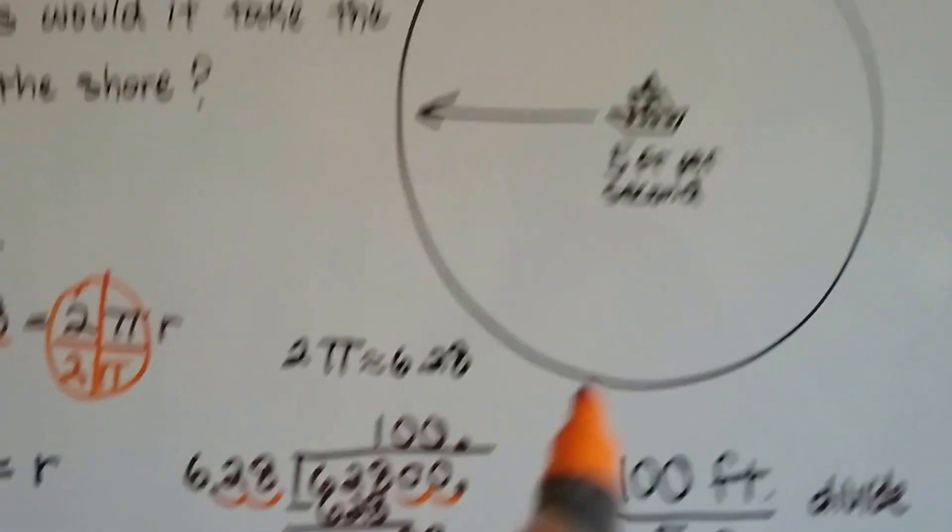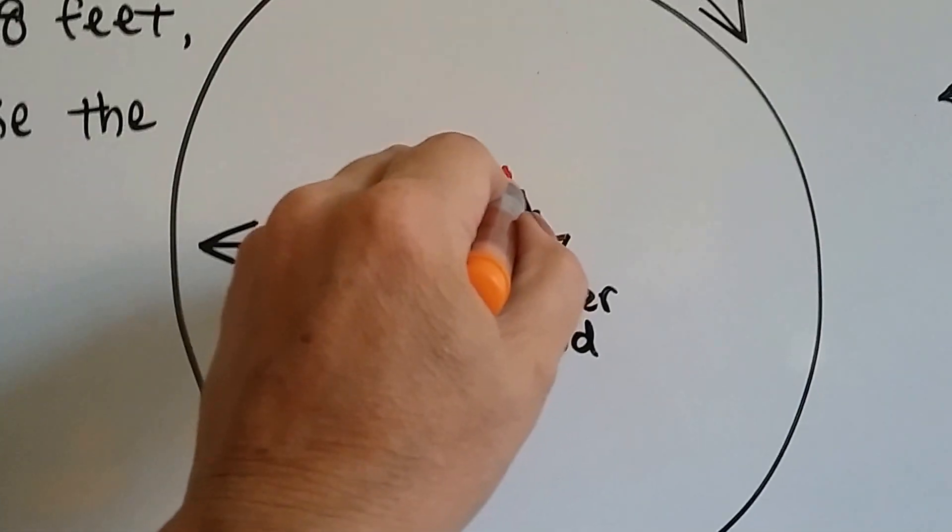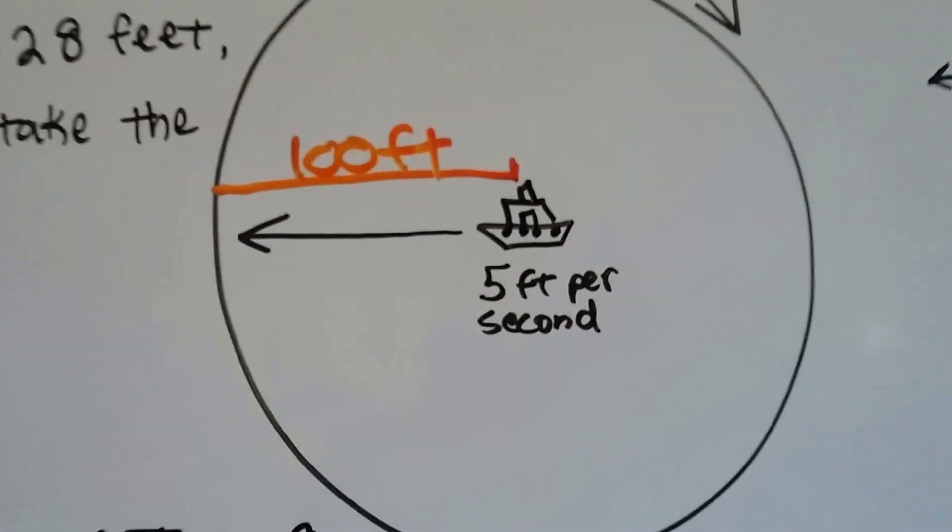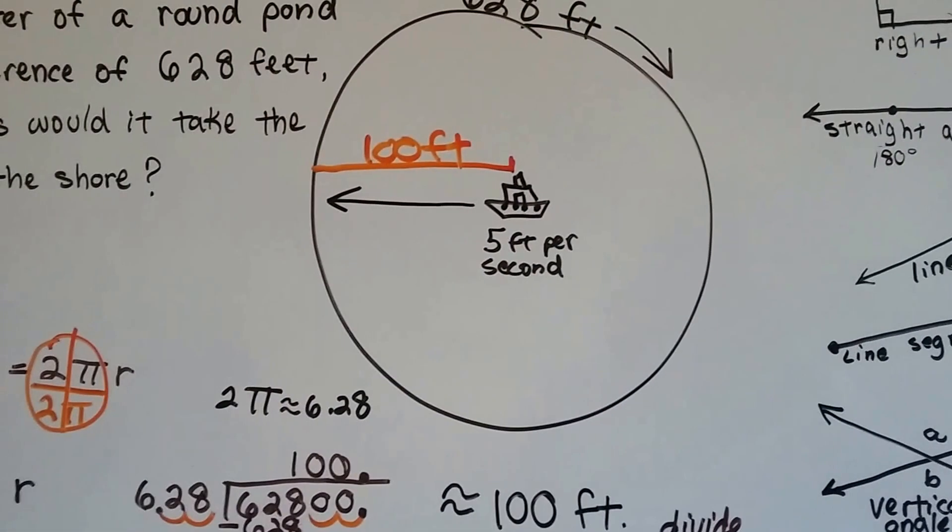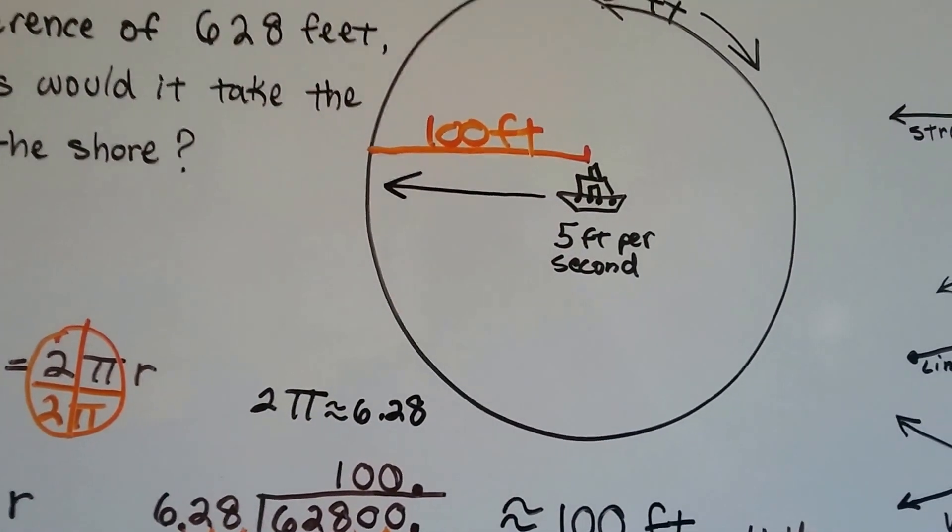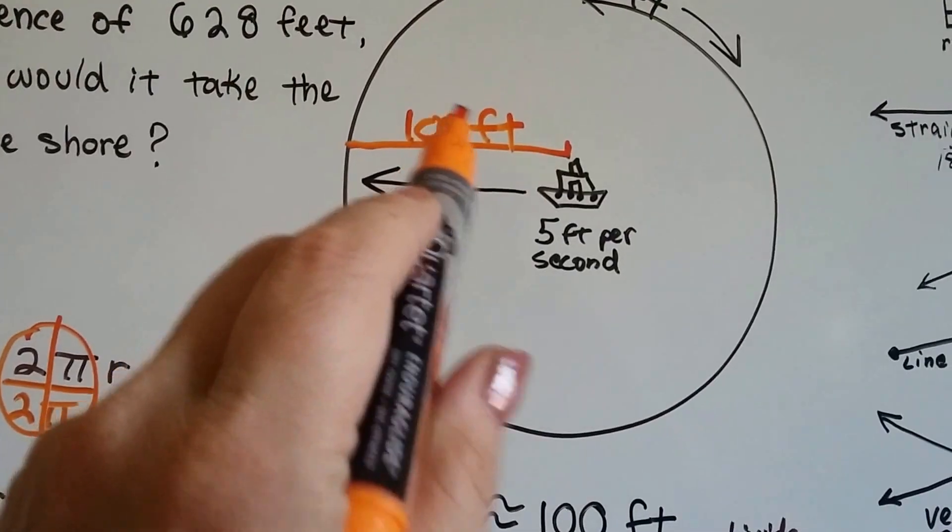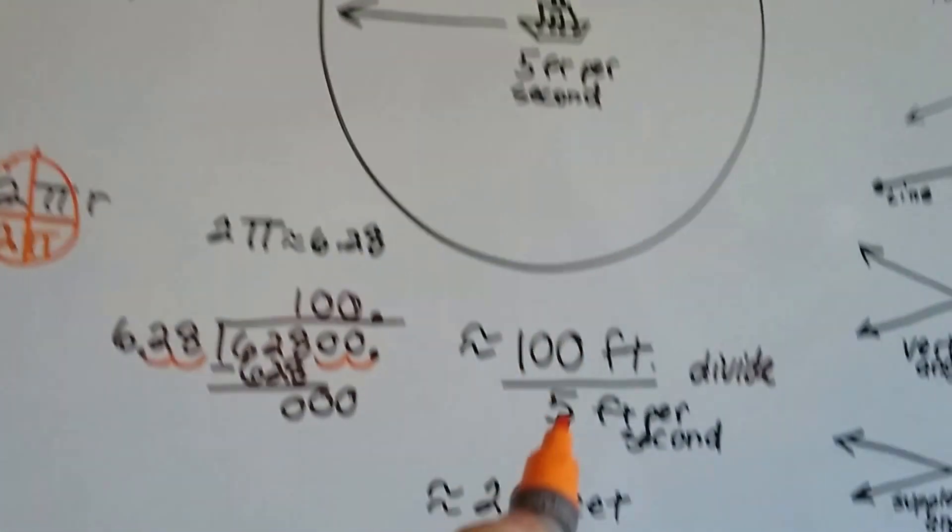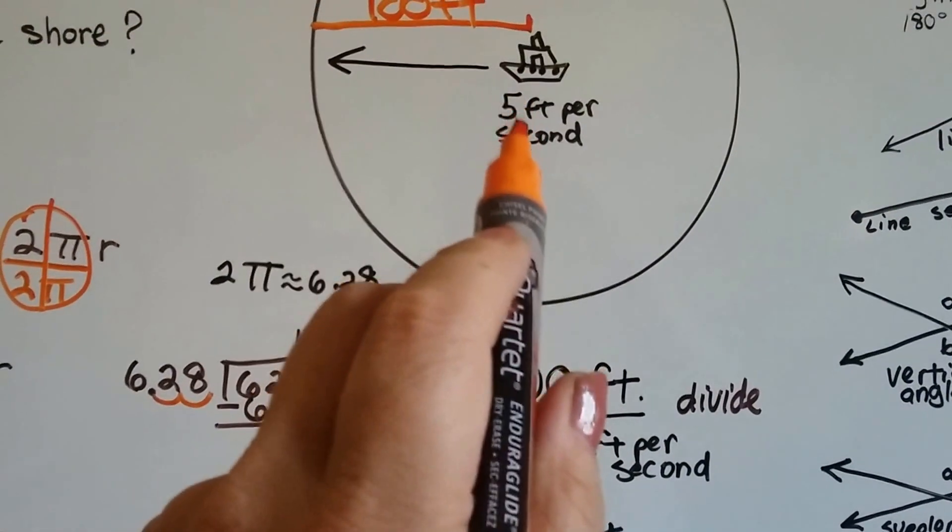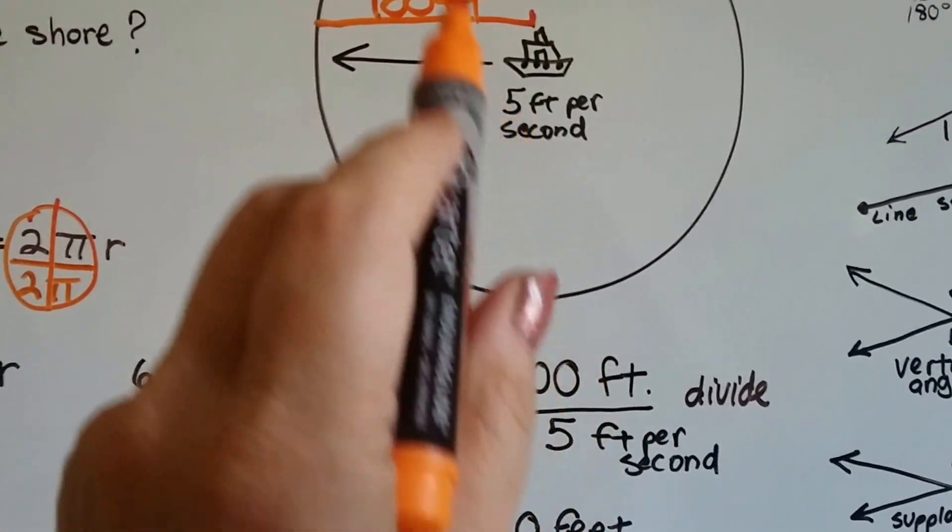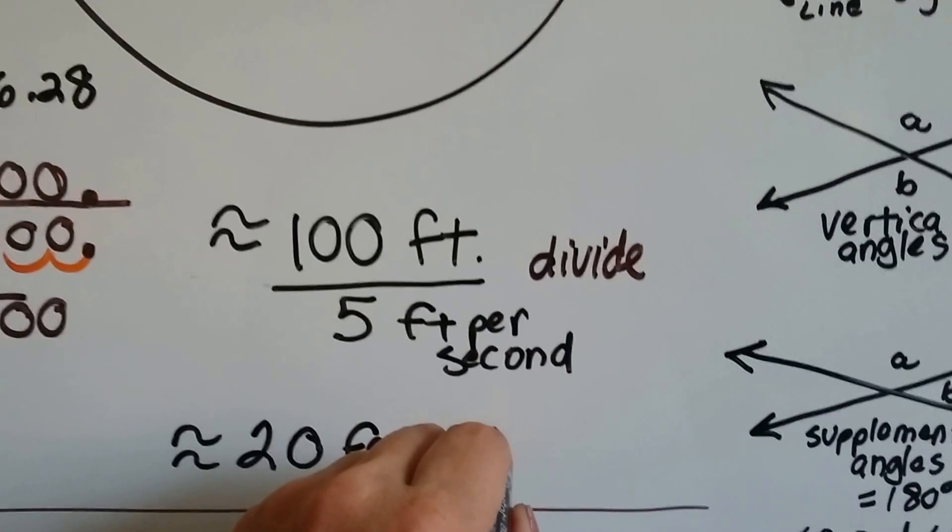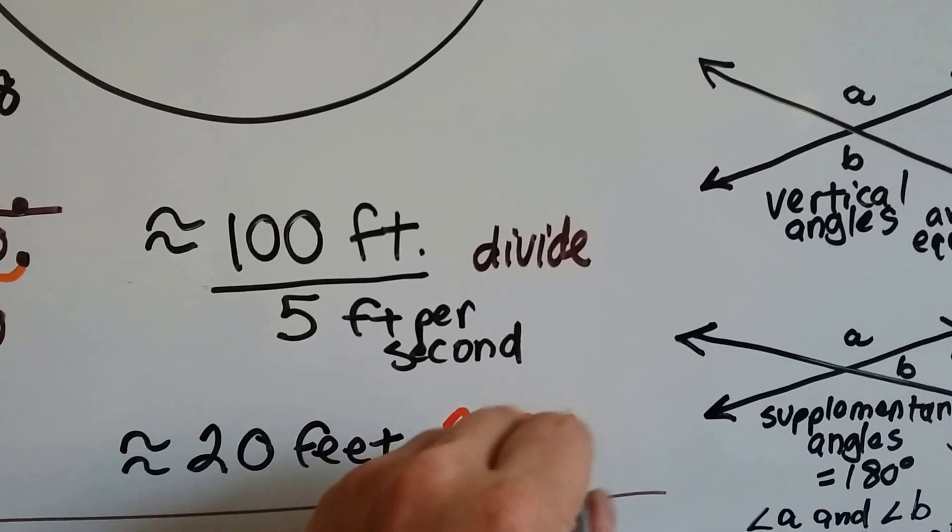So now we know that the radius here, from this point to this point, is 100 feet. So if the boat can go 5 feet per second, how many seconds is it going to take it to reach the edge? Well, that's 100 feet. 100 divided by 5 is 20. And if it goes 5 feet per second, and that's 20 feet, then it's 20 seconds. Our answer is approximately 20 seconds.